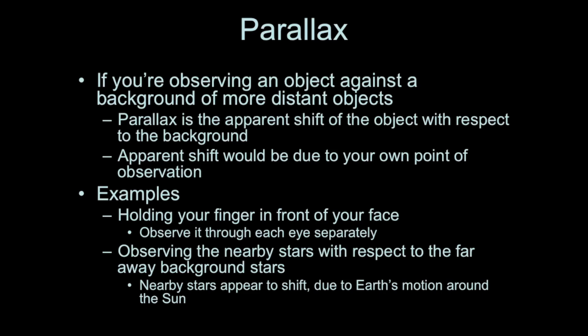For example, the Earth moving around the Sun in its orbit over the course of a year will actually affect the appearance in position of nearby stars relative to very distant background stars. Let me show you how this works.